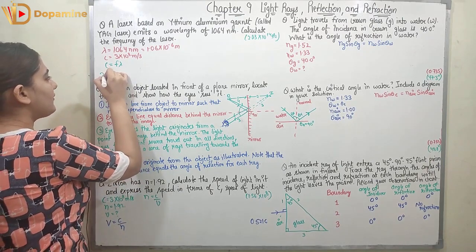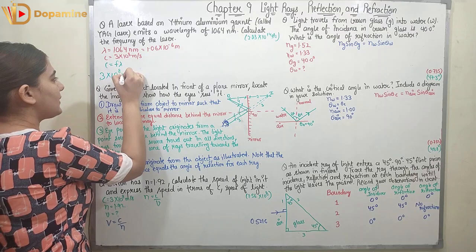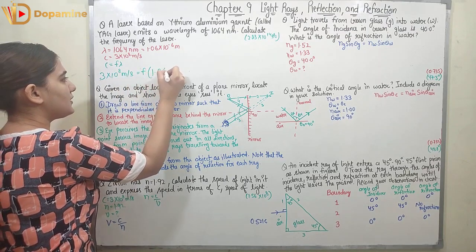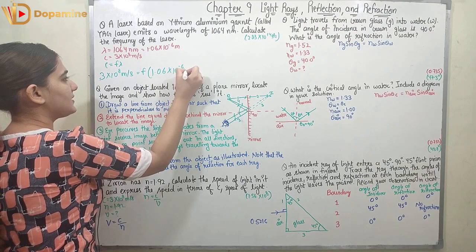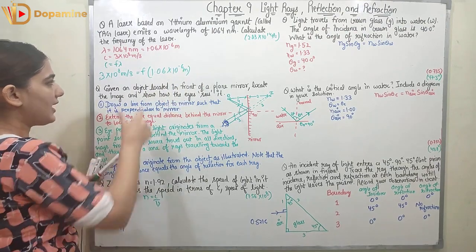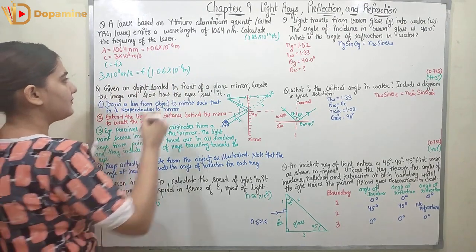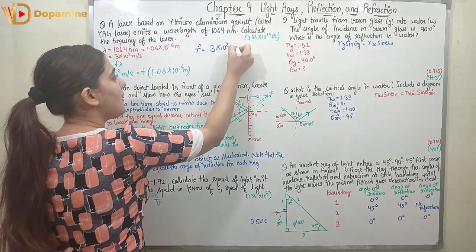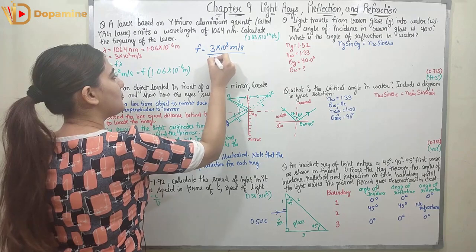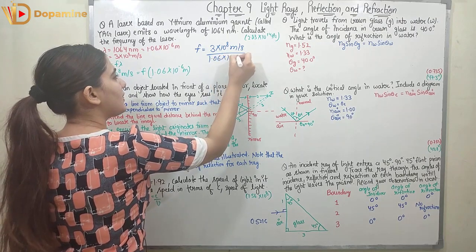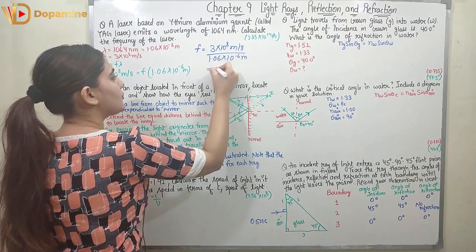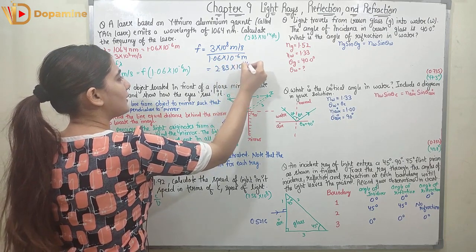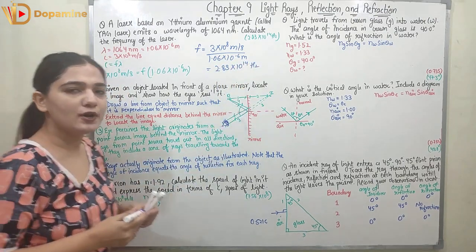Substituting: 3 × 10⁸ m/s = f × 1.06 × 10⁻⁶ m. Dividing both sides, frequency = 3 × 10⁸ / 1.06 × 10⁻⁶, which comes out to be 2.83 × 10¹⁴ Hz. I hope you understood problem number one — the frequency was calculated very simply.